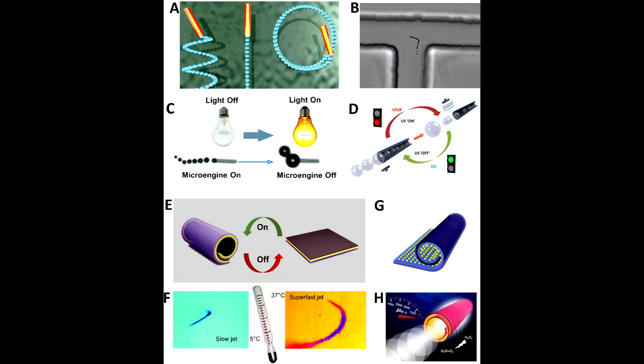Here we see the motion control of micro-rockets. First, trajectories of freely moving rockets. Then, guided micro-rocket movement in a predefined micro-channel network. Then, light-controlled micro-rocket motion. Then, ultrasound-modulated motion. Then, reconfigurable, shape-controlling micro-rocket motion.